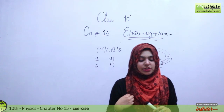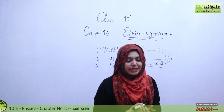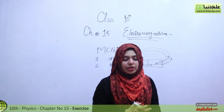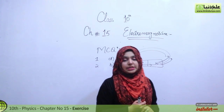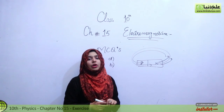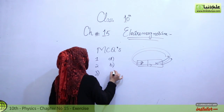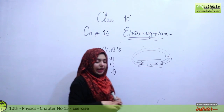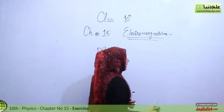Number 3 is: the presence of the magnetic field can be detected by — number A small mass, number B stationary positive charges, number C stationary negative charges, and number D the magnetic compass. To detect the presence of a magnetic field we use the magnetic compass, so number D is the right option.